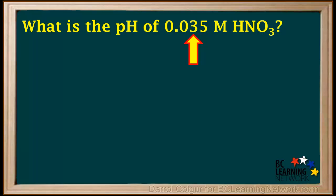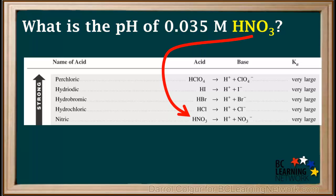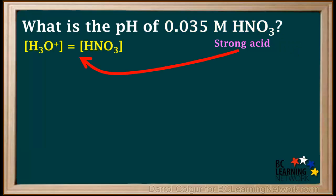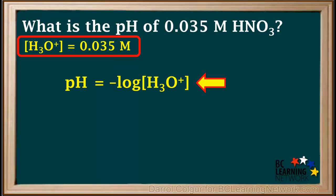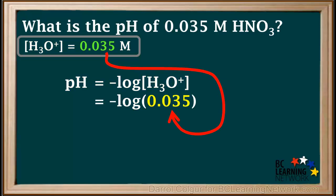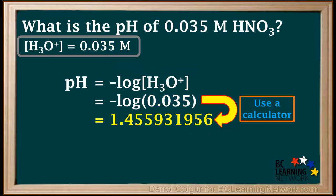Of course, most solutions have concentrations that are not just simple powers of 10. For example, we're asked to find the pH of 0.035 molar HNO3. We can classify HNO3, or nitric acid, as a strong acid. Because it's a strong acid, the concentration of hydronium equals the concentration of the acid, which is 0.035 molar. pH is equal to the negative log of hydronium ion concentration. Substituting 0.035, and using a calculator, we find the negative log of 0.035.